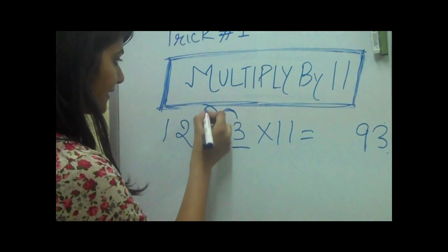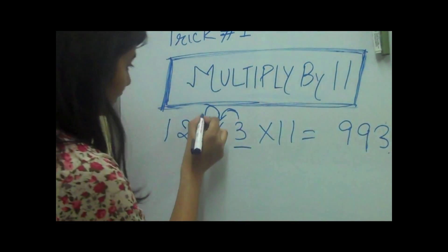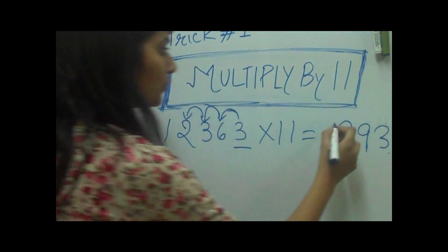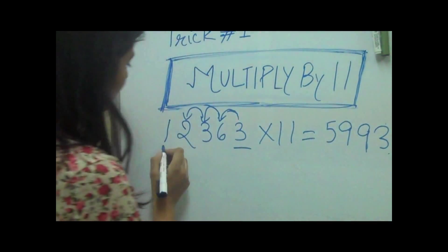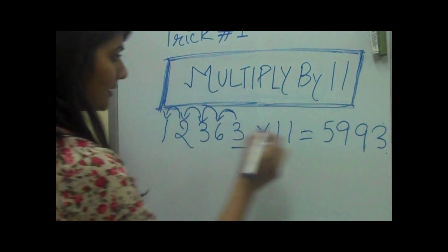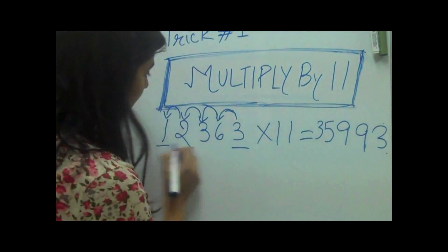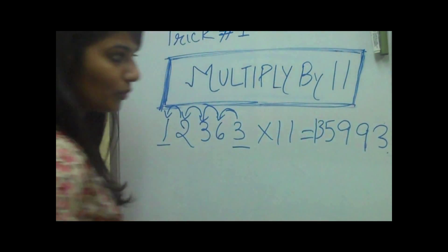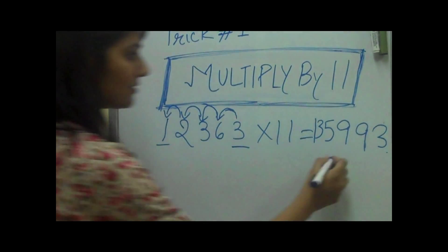Then we'll add the next two numbers, 3 plus 2 is 5. And then we'll put 2, 2 plus 1 is 3, and then we'll put the first number as it is. 135993 is the answer.